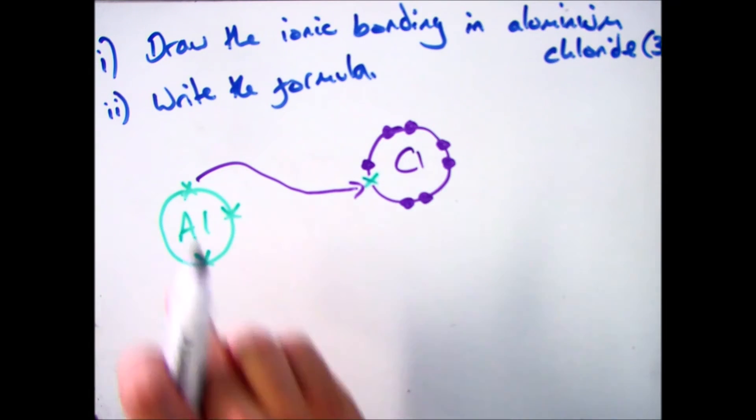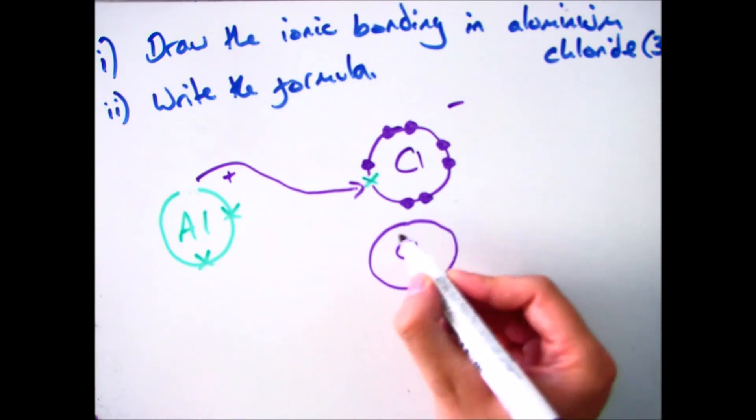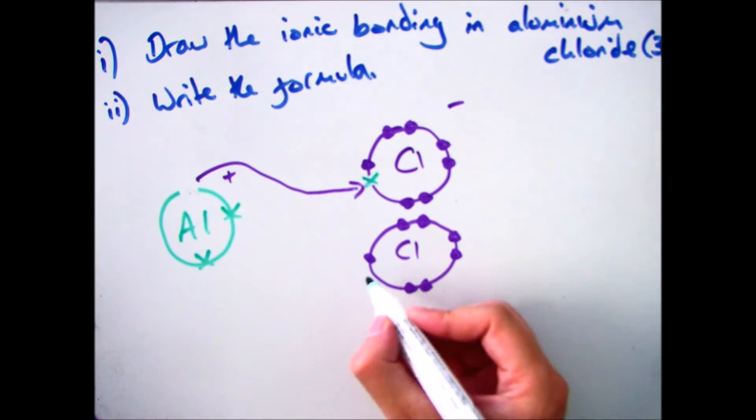So that's going to give you a chlorine with a full outer shell, which is going to become negative, and aluminium, which is positive, but still has two more to lose. Draw another chlorine, and continue this pattern until all the aluminium atoms are gone.